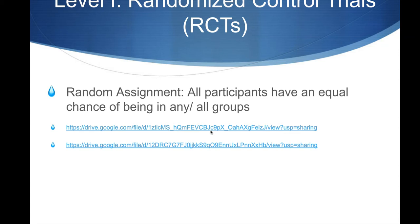So the way we're going to define random assignment — to know that a study reaches level one and is not a group study without random assignment, which would be a level two — in order for it to be random assignment, all participants have an equal chance of being in any or all groups. We've got 30 people with aphasia, and each of those 30 people has an equal chance of being in group A or group B.